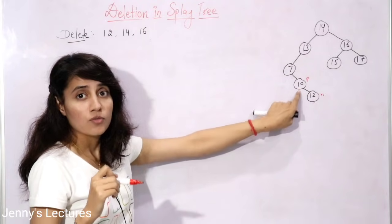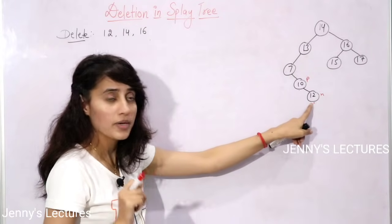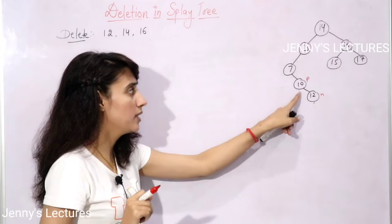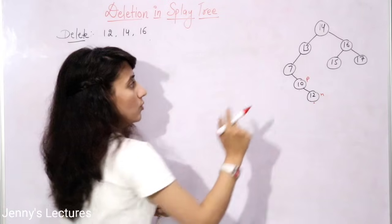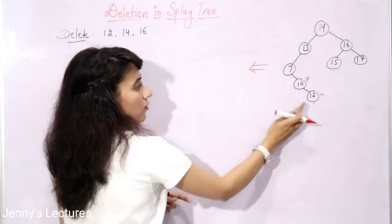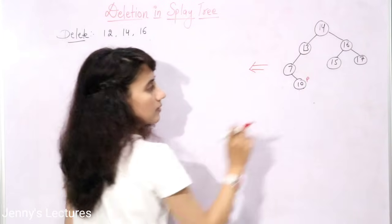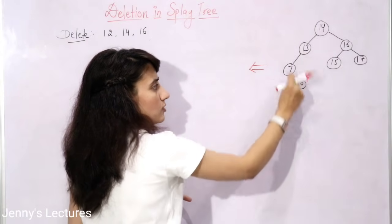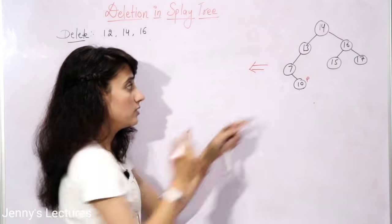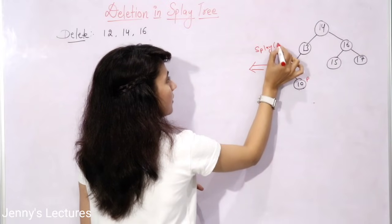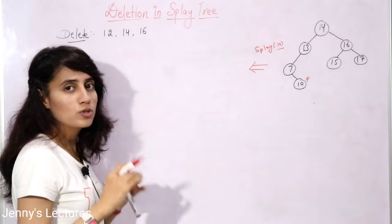After deleting 12, we splay the tree for the parent of the deleted node. The parent of 12 was 10, so we splay on 10. This is the important point to note. So now we perform splay at 10.